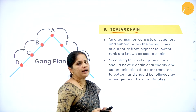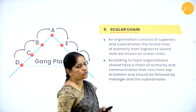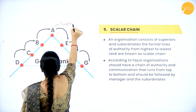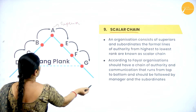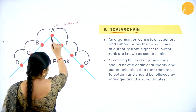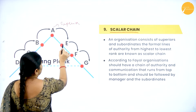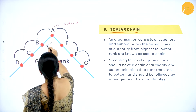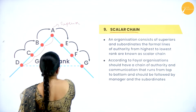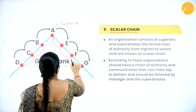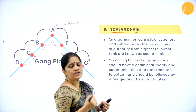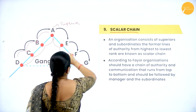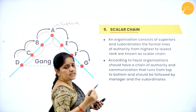Henry Fayol says we should have a scalar chain for communication lines as well. For example, if there are two lines of authority — A to B, B to C, C to D, and A to E, E to F, F to G — orders and information must follow the same formal route. If worker D needs to send information to A, it should go from D to C, C to B, and B to A.